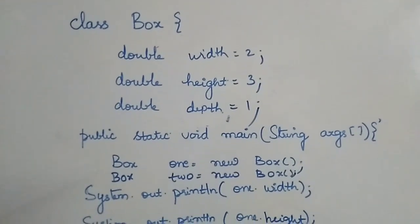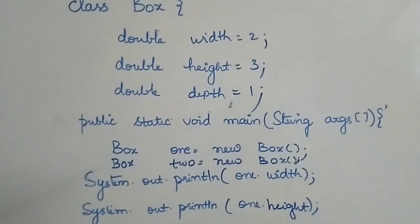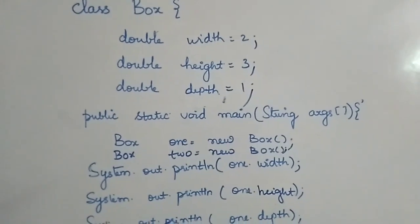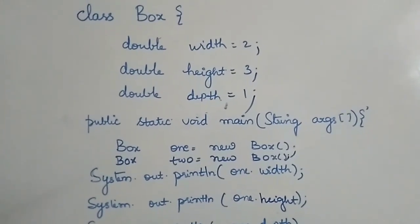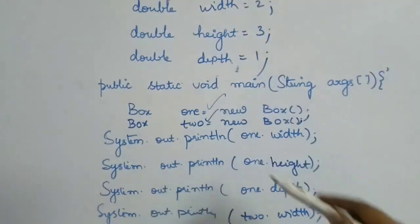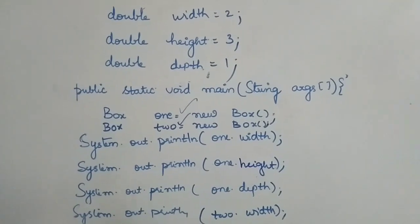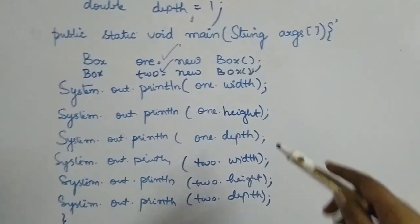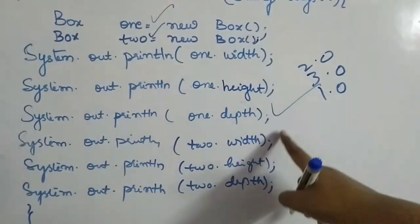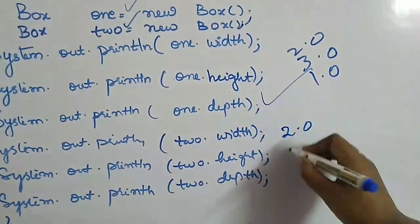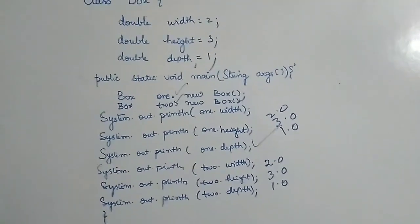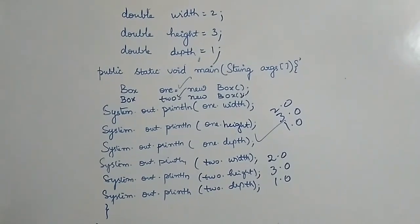What is the problem with just initializing instance variables? It is a very rare case where you want all objects to have the same values. Mostly each object will have its own instance values. For example, if I have two objects — object1 and object2 — they will both get the same values for width, height, and depth: 2.0, 3.0, and 1.0. No matter how many objects you create, they will all have the same values. That is why we need explicit constructors.